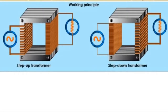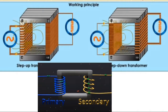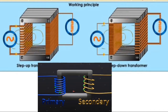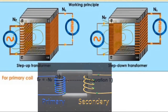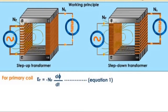Working: As the current in the primary varies, the magnetic flux linked with the primary coil P1, P2 varies and an EMF is produced due to self-induction. Due to mutual induction, an EMF is induced in the secondary coil. If there are NP number of turns in the primary and NS turns in the secondary, then EP = −NP (dΦ/dt), which is equation 1.